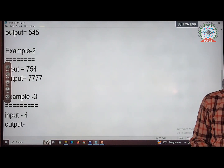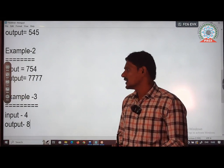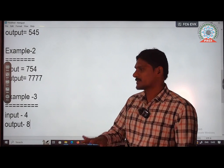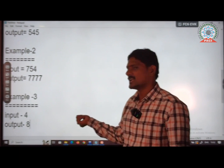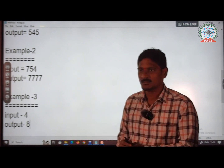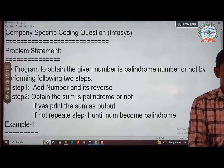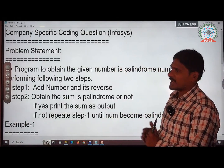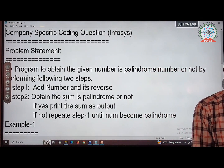The main intention of this program is to find out whether the given number eventually becomes a palindrome by performing two steps: step one is add the number and its reverse, and step two is obtain whether that sum is a palindrome or not. I will now implement this in the C programming language.